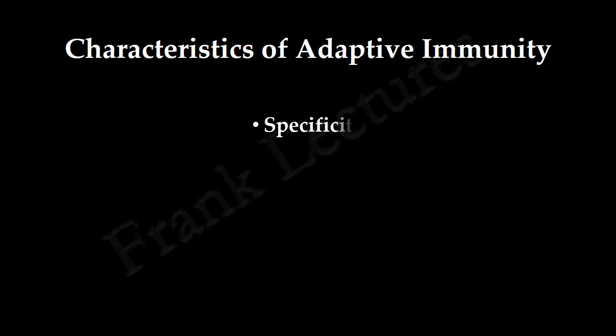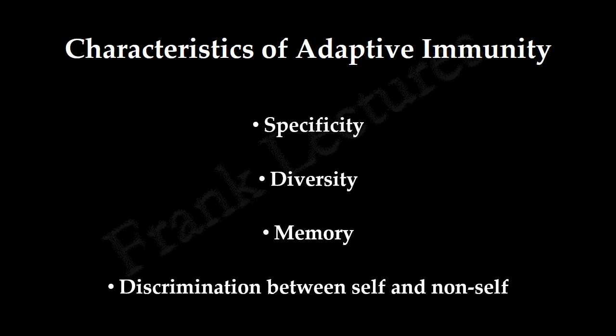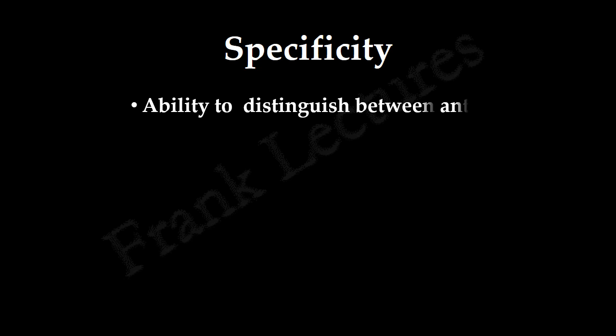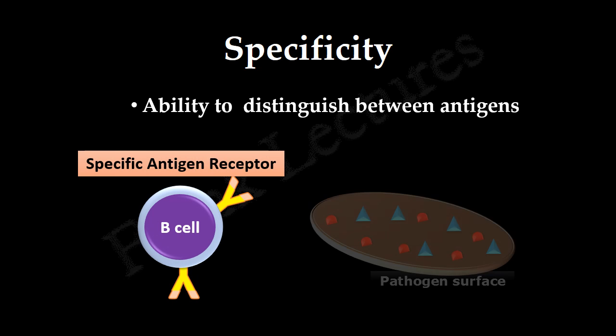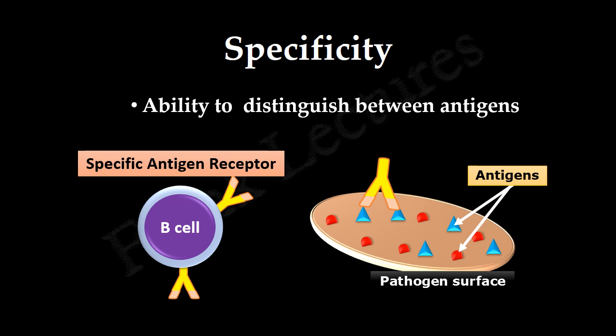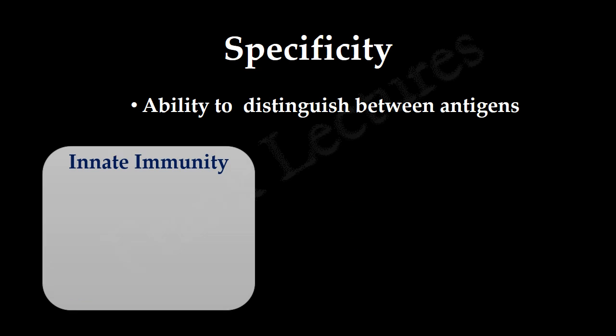The four main characteristics of adaptive immunity are: specificity, diversity, memory, and discrimination between self and non-self. Specificity is the ability to distinguish between antigens. Adaptive immunity acts against specific foreign antigens, meaning it reacts in a different way to each foreign antigen. Innate immunity, by contrast, recognizes molecular patterns shared by many pathogens.